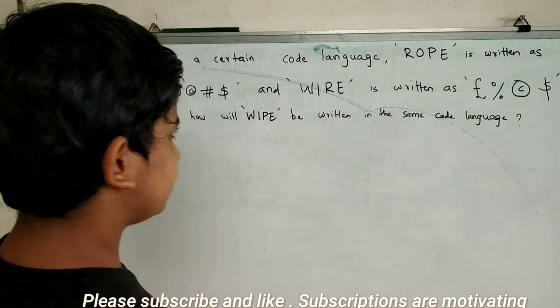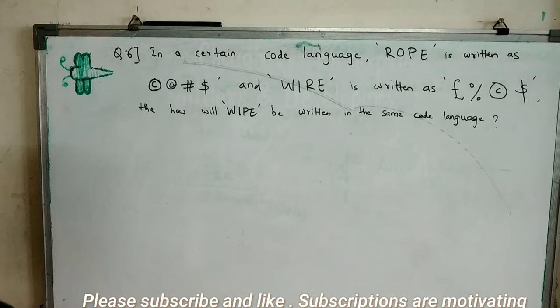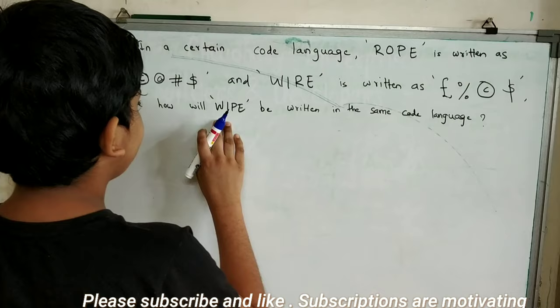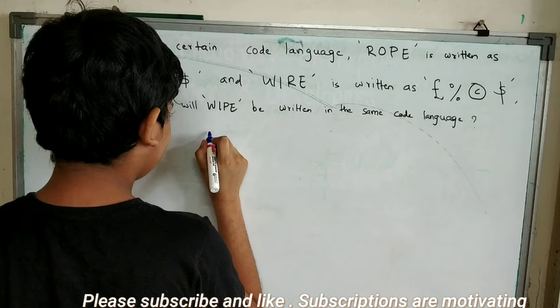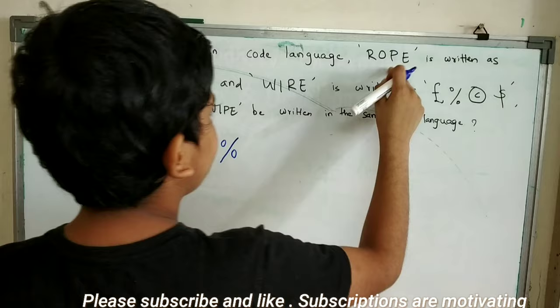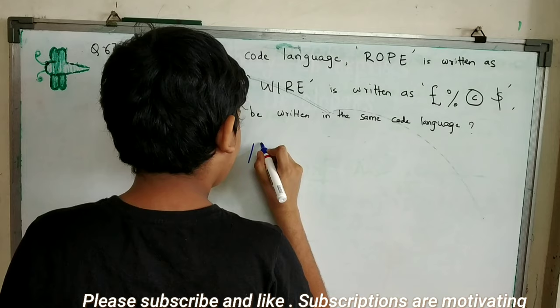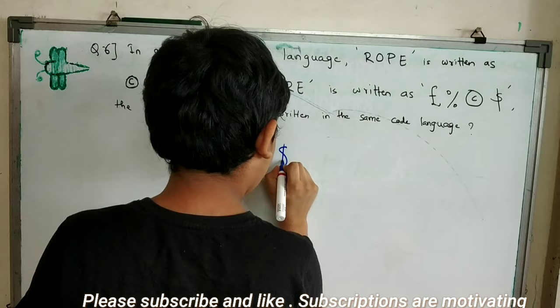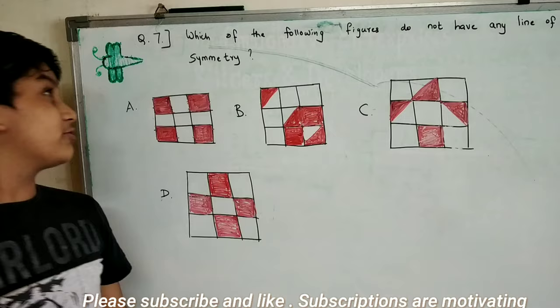This is question number six. In a certain code language, 'rope' is written as copyright at-rate dollar, and 'wire' is written as pound percentage copyright dollar. How will 'white' be written in the same code? Since 'wi' of white and 'wi' of wire are the same, we copy the first two letters from wire's code, then copy the last two letters from rope's code. So the answer is pound percentage dash dollar.